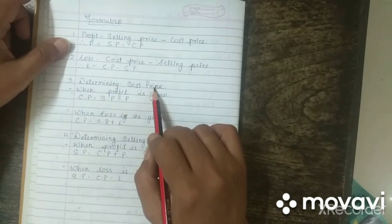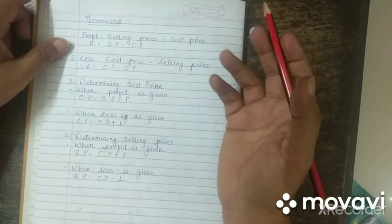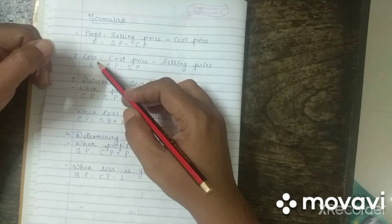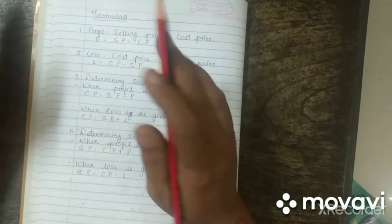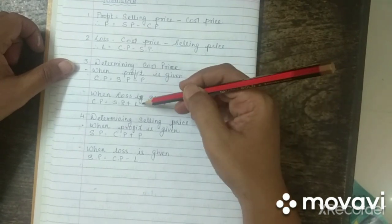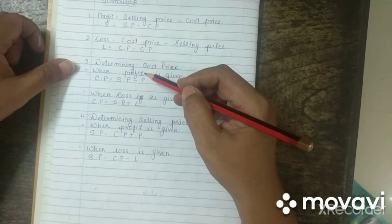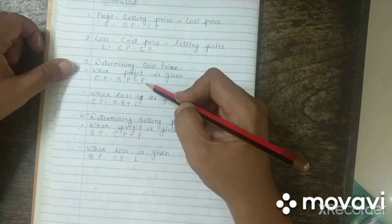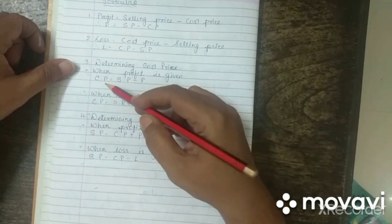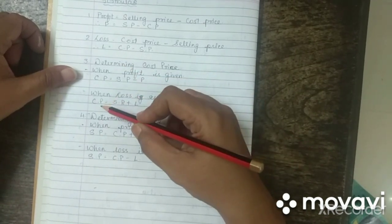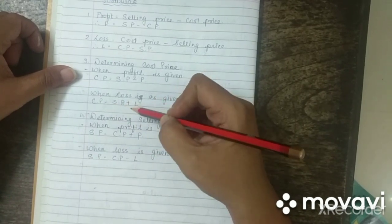To determine the cost price: in general cases, the selling price and cost price are given and you find whether it is a profit or a loss. But sometimes you have to find the cost price when profit or loss is given. When profit is given, Cost Price equals Selling Price minus Profit. When loss is given, Cost Price equals Selling Price plus Loss.